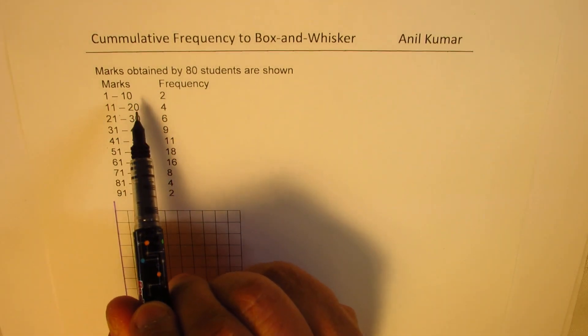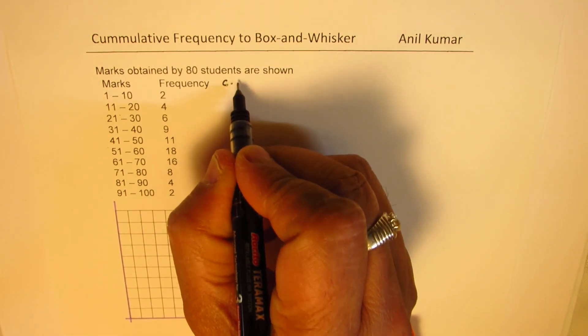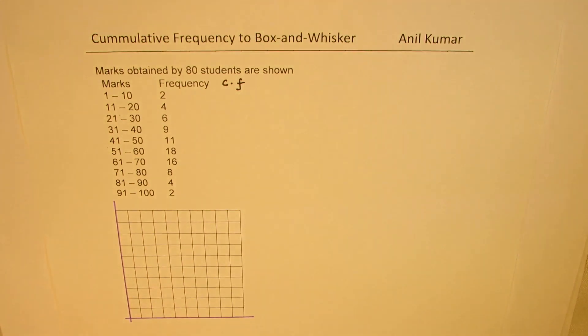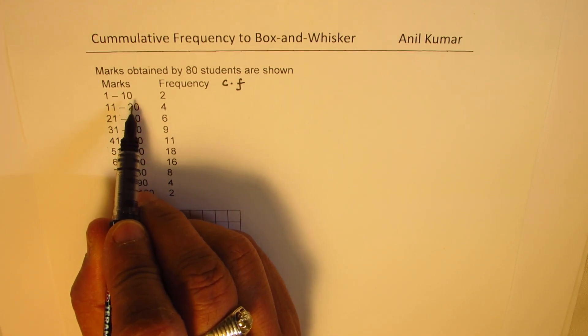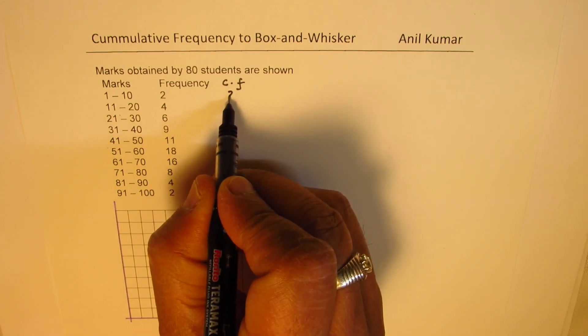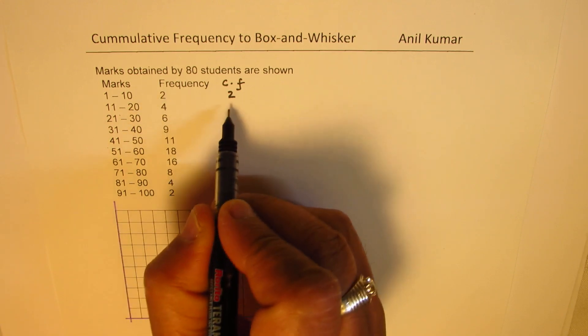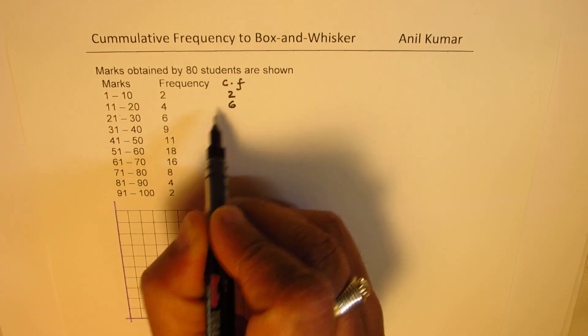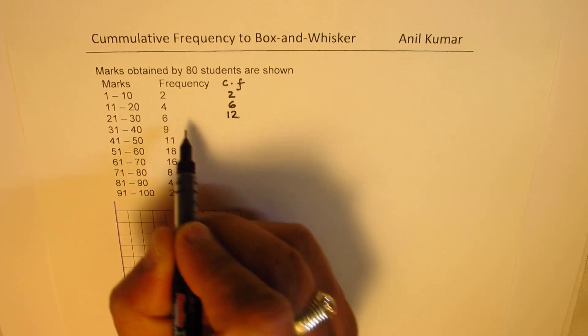The first step here is to add a column for cumulative frequency. Now, cumulative frequency is the total frequency up to the given point. The total frequency up to 10 is given to us as 2. Now, up to 20, it is 2 plus 4. Just add them up. So, it is 4 plus 2 as 6. And now, we'll add 6 to 6 to get up to 30, which becomes 12.